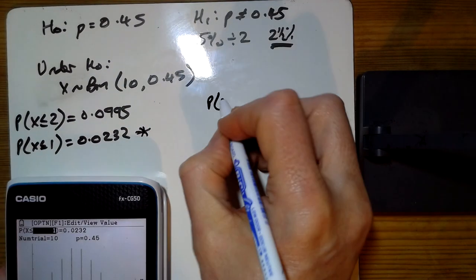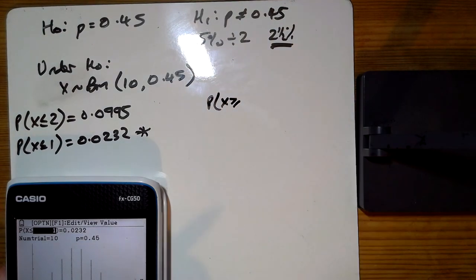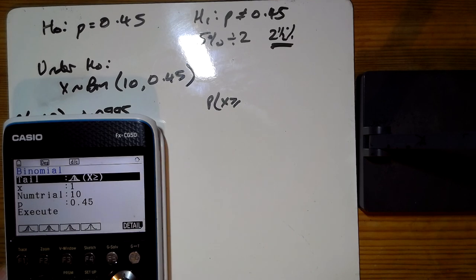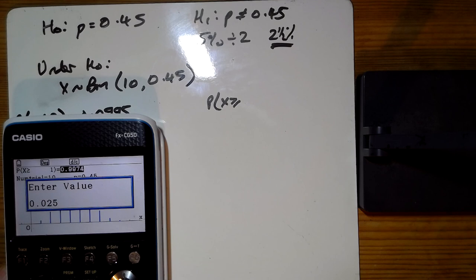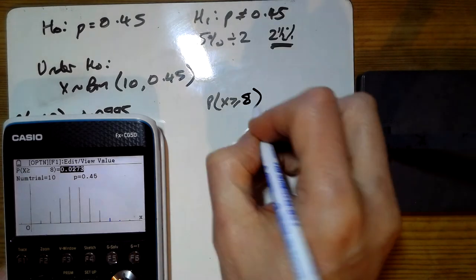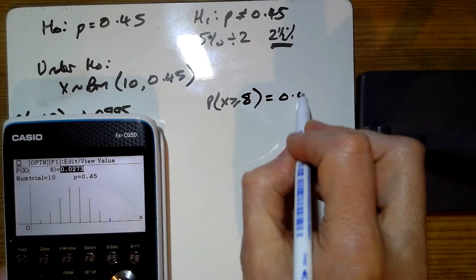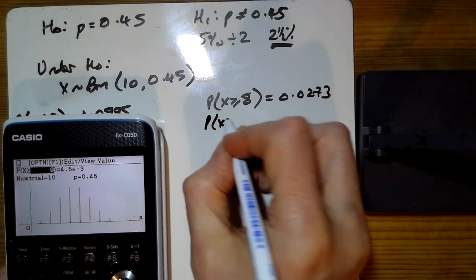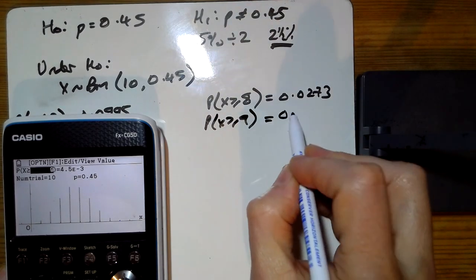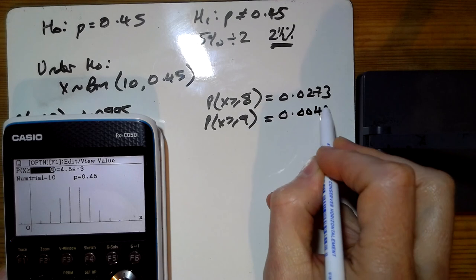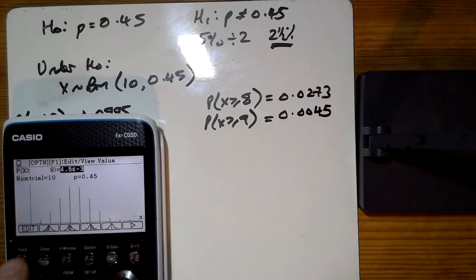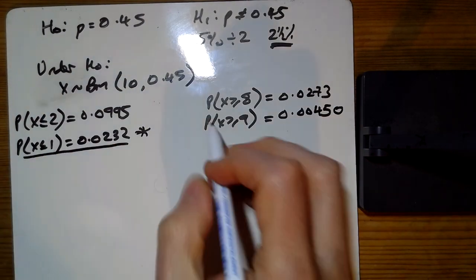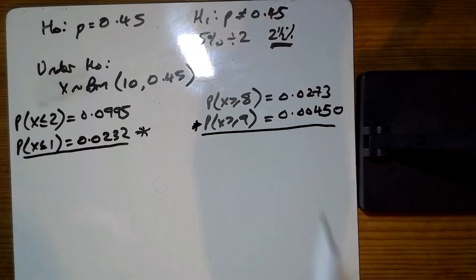Let's go to the other end as well. The probability that X is greater than or equal to - on my calculator now I'm just changing this to a greater than, and again I'm going to put 0.025 there. It tells me greater than or equal to 8 is 0.0273, a little bit too much. So we'll go back and change it to 9. The probability that X is greater than or equal to 9 is 0.00450, so there's the two ends. This is the critical value at that end, and that's the critical value at the other end.